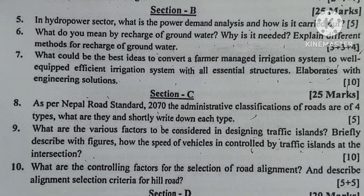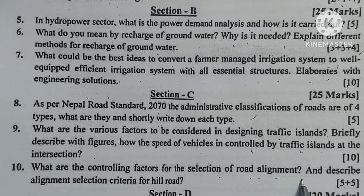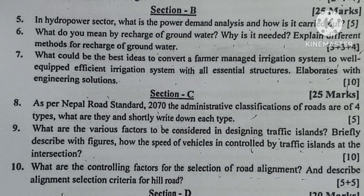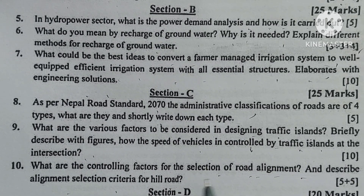What are the controlling factors for the selection of road alignment and describe the alignment selection criteria for a hill road?